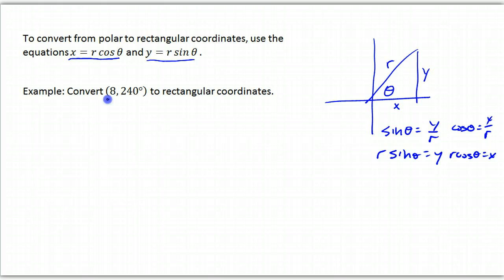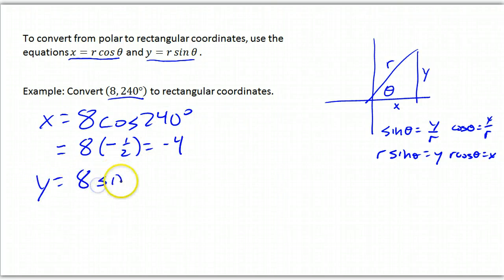So if you want to convert this point in polar coordinates to rectangular coordinates, you just say, okay, x is equal to r cos 240°, which is 8 times -1/2, or -4. The cosine of 240 is -1/2. y is 8 sin 240, which is 8 times -√3/2, which is -4√3. So this point in rectangular coordinates would be (-4, -4√3).